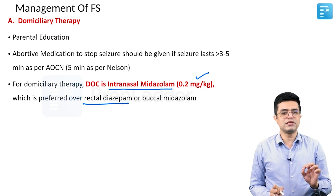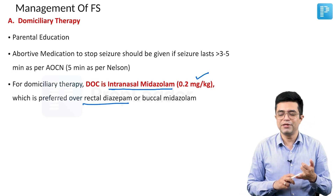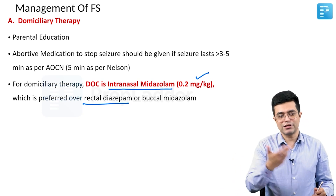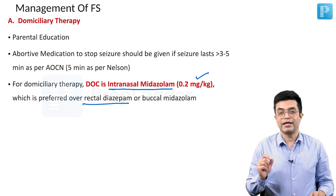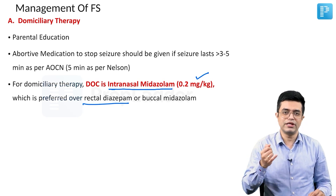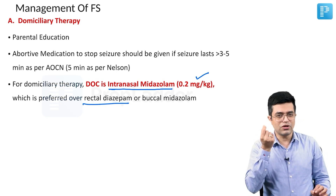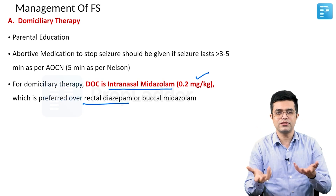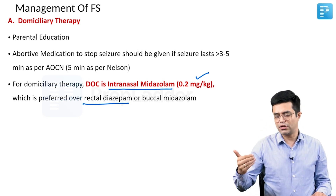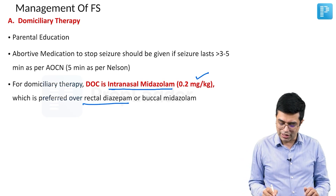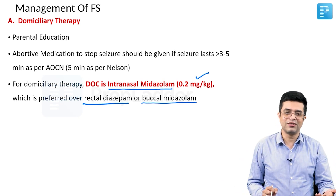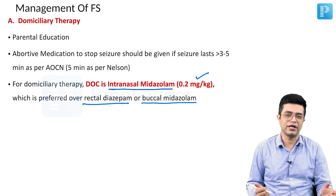Intranasal midazolam is preferred over rectal diazepam. Rectal diazepam suppositories are not easily available, there are cultural issues, and in practice parents are scared to insert the suppository to an adequate depth — so it stays at the opening of the anus and is not effective. AOCN guidelines now say rectal diazepam is an alternative; you should use intranasal midazolam. Buccal midazolam is useful but not available in our country.